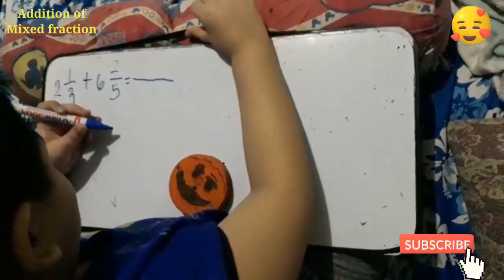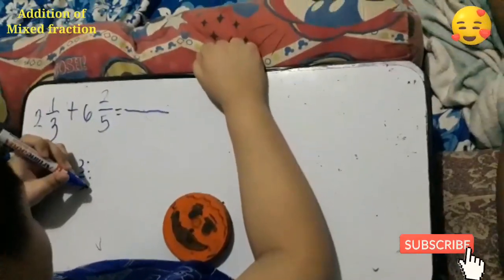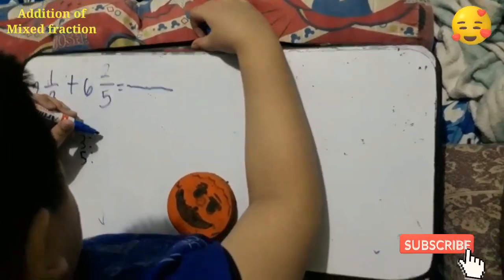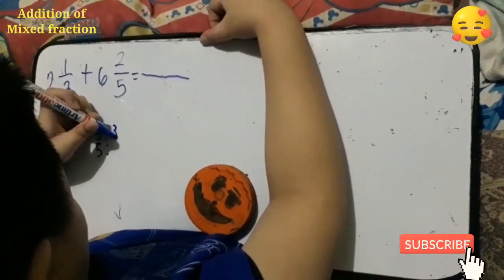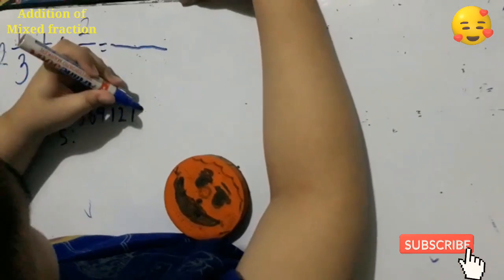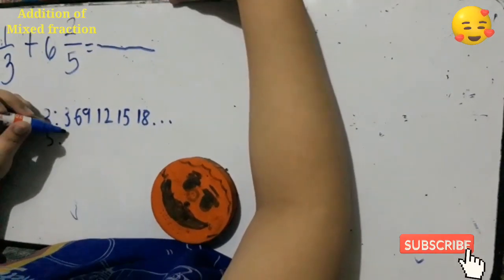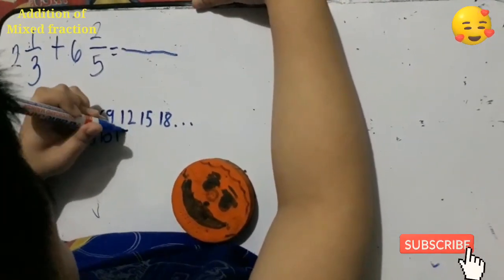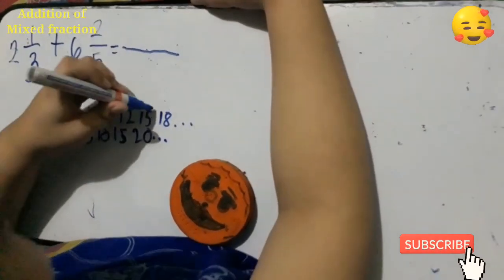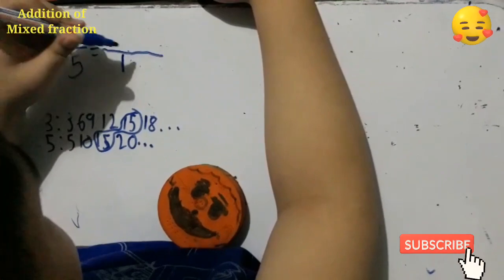We're going to put here the LCD of 3 and 5. Let's keep counting: 3, 6, 9, 12, 15, 18... stop. Here for 5: 5, 10, 15... So what's the same? The same is 15. So that is the LCD.